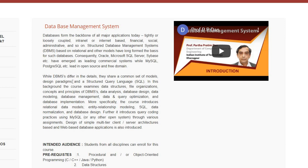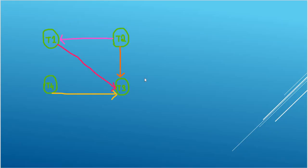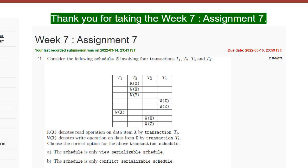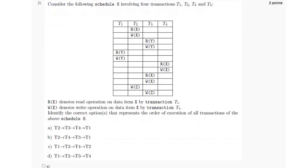Hello everyone, welcome to my channel. In this video I will discuss Week 7 Assignment 7 of Database Management System. For question number one, we have been given a schedule and have to identify the correct option. Drawing the precedence graph, we observe the graph has no cycle, so it is conflict serializable, and since it is conflict serializable it is also view serializable. The answer is option C: the schedule is both view and conflict serializable.